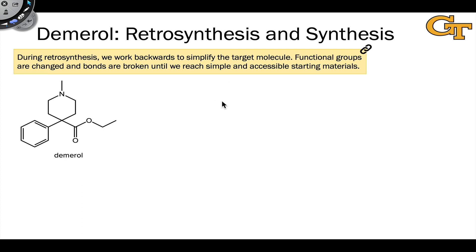Now, I want to look at a specific example of a retrosynthesis and a synthesis for the pharmaceutical compound Demerol. This is actually a brand name of the compound, not the official chemical name. Strangely, it ends in 'ol' even though it doesn't contain an alcohol, but there you go, Demerol.